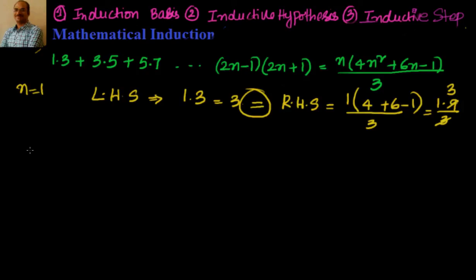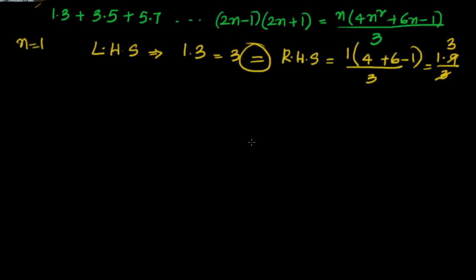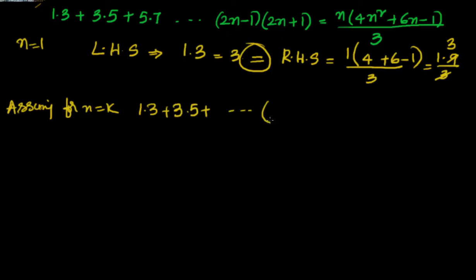Now we assume that LHS equals RHS for n equal to k, and we have to prove that it is also true for n equal to k+1. Assuming for n=k, we have 1×3 + 3×5 + ... + (2k−1)(2k+1) = k(4k² + 6k − 1)/3.